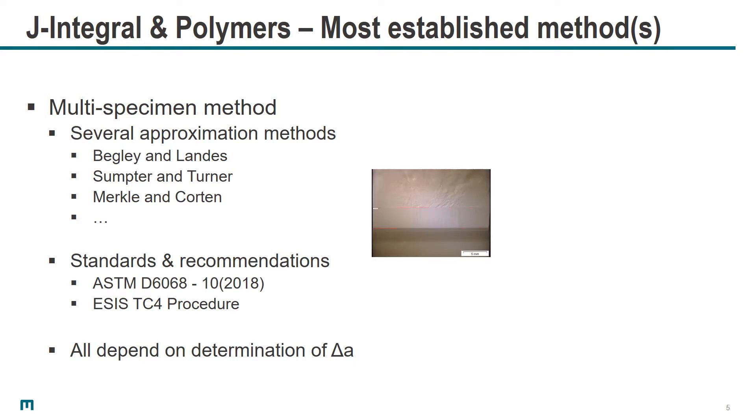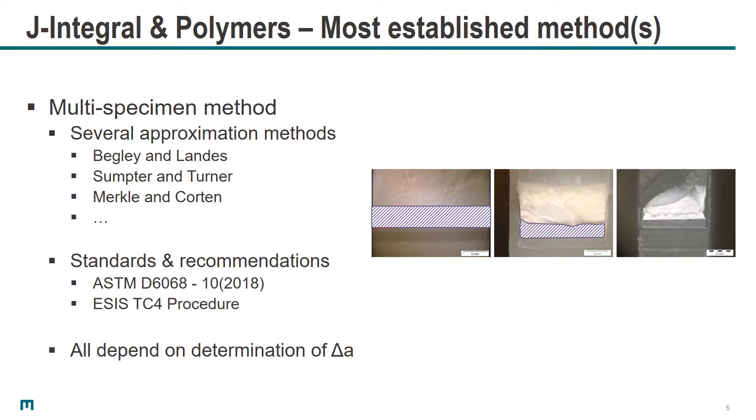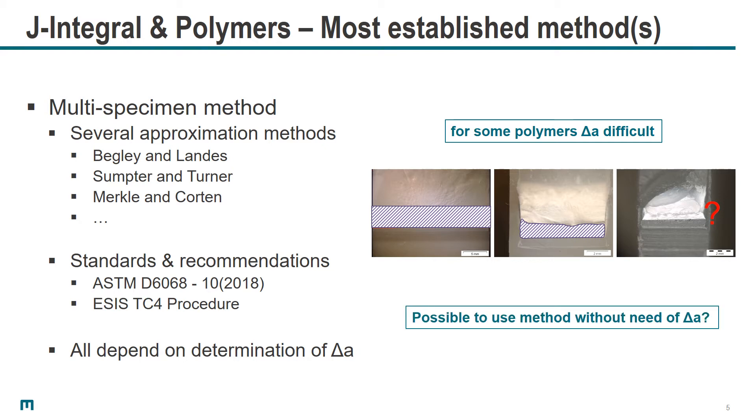If you have a polymer like ABS that behaves quite nicely with regard to crack propagation, it's quite easy to determine delta A correctly. However, other polymers such as polypropylene make it more difficult to discern the exact level of crack advancement on the fracture surface, as shown in the second picture, or even worse in the third one. So the question is, is it possible to use a method to determine fracture parameters without the need to determine delta A post-mortem on the fracture surface?